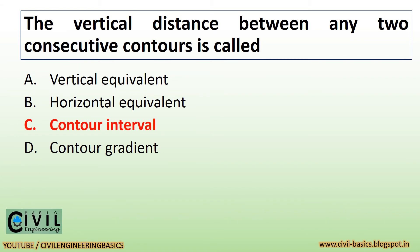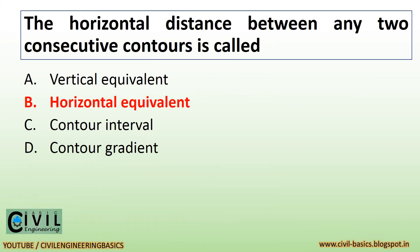The vertical distance between any two consecutive contours is called the contour interval. The horizontal distance between any two consecutive contours is called the horizontal equivalent.